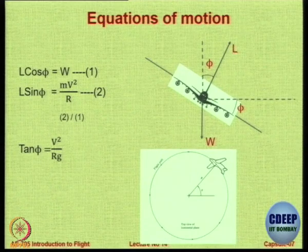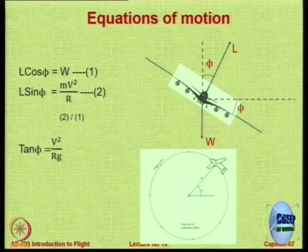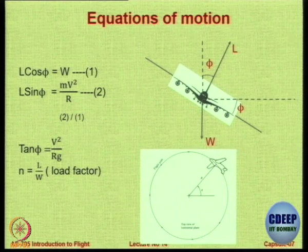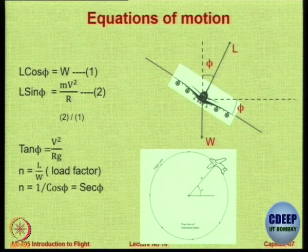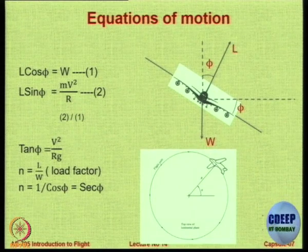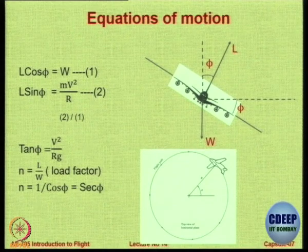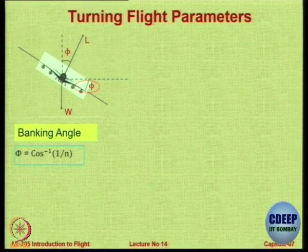For a given speed, the angle of bank is inversely proportional to the radius of turn, and the ratio of L to W is going to be the load factor. In turning flight this need not equal 1 — it will be equal to secant of phi, that is 1/cos φ. So if phi is 60 degrees, n equals 2 straight away. The banking angle is a very important parameter; it is cos⁻¹(1/n).